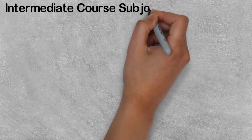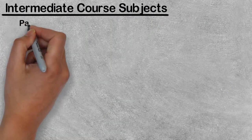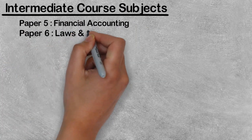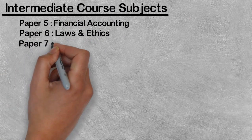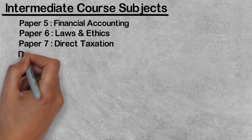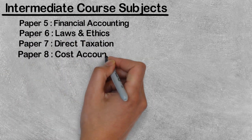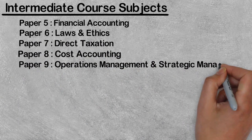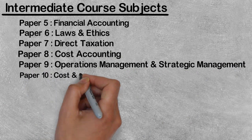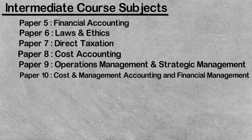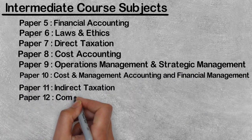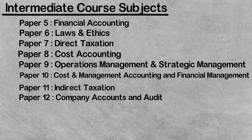The Intermediate course has 8 subjects: Paper 5 — Financial Accounting; Paper 6 — Laws and Ethics; Paper 7 — Direct Taxation; Paper 8 — Cost Accounting; Paper 9 — Operation Management and Strategic Management; Paper 10 — Cost and Management Accounting and Financial Management; Paper 11 — Indirect Taxation; Paper 12 — Company Accounts and Audit.